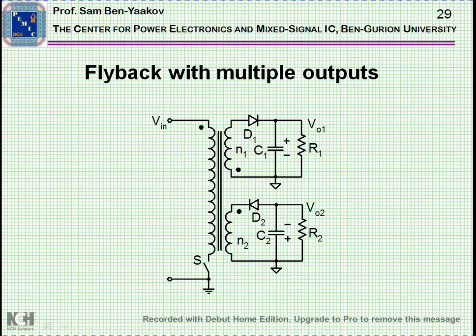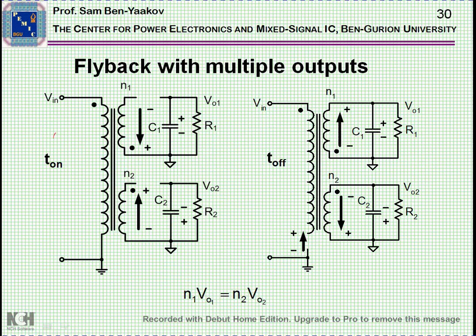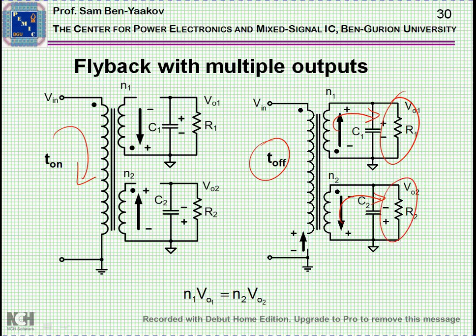Another very important feature of the flyback converter is the fact that you can have multiple windings, that is you can have more than one output. How does it work? Well, during the on time the story is the same, you are storing energy in the coupled inductor. This is now a coupled inductor in this case with three windings. And then in the discharge state, that is in T_off, energy will come out from here and energy will come out from here, and it will feed the output section here and here.